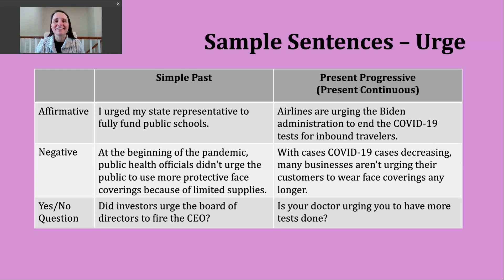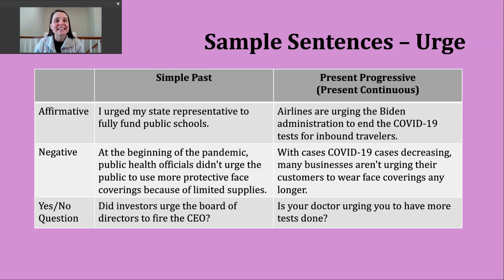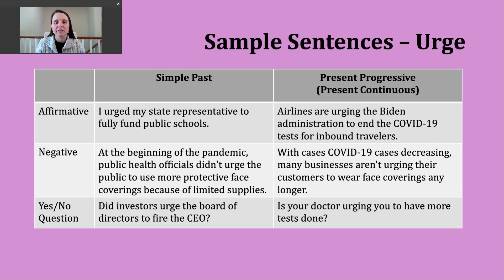This weekend, I wrote several emails encouraging, advocating for greater funding for public schools in my home state. Now, if you want to make a negative simple past tense sentence, we can do that by using did not and then the base verb. You might hear some people use the contraction didn't and then the base verb — it means the same thing. Notice we're not using the -ed form of the verb here. For example: at the beginning of the pandemic, public health officials didn't urge the public to use more protective face coverings because of limited supplies.